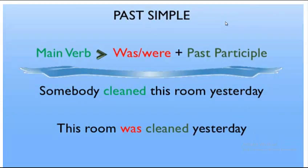Now, how do we change the past simple into passive? In past simple passive, we still start with the object — same as in the present — but followed by 'was' or 'were' (verb 'to be' in the past), then the past participle. Let's see this example.